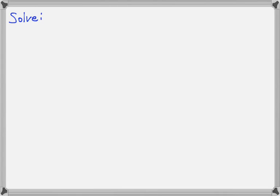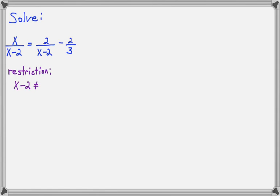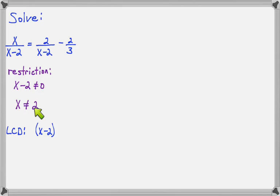Last example: x/(x-2) = 2/(x-2) - 2/3. First we do our restrictions: x - 2 cannot equal zero, so x cannot equal 2. That's the only restriction. So if we solve this and the solution comes up as 2, we have to throw it out. Our common denominator will be 3(x-2), needing both the factor of x - 2 and a factor of 3.